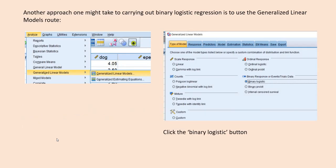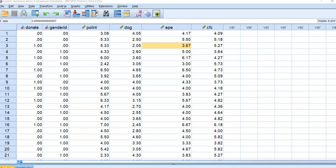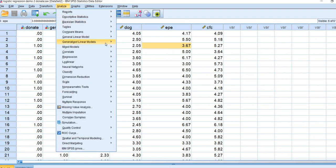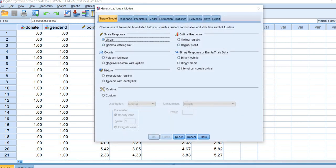Now let's look at another approach for carrying out binary logistic regression — we can use the Generalized Linear Models route. In SPSS, go to Analyze, then Generalized Linear Models. I'll click out of the PowerPoint and demonstrate in real time. In SPSS, go to Analyze, Generalized Linear Models, click on this button, and first go to where it says Binary Logistic and click that.